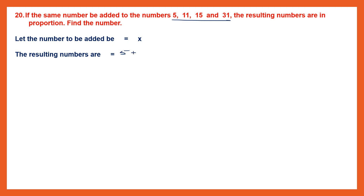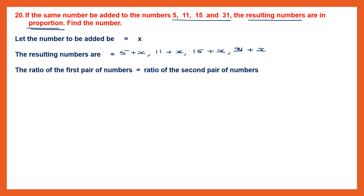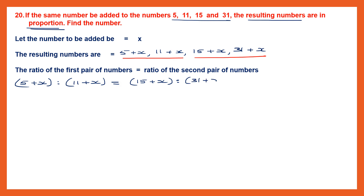The resulting numbers will be: 5 plus x, 11 plus x, 15 plus x and 31 plus x. These are said to be in proportion, meaning the ratio of the first pair equals the ratio of the second pair. So (5 plus x) to (11 plus x) equals (15 plus x) to (31 plus x).